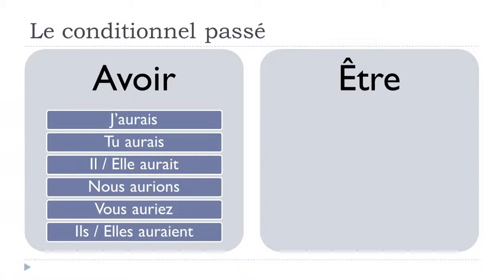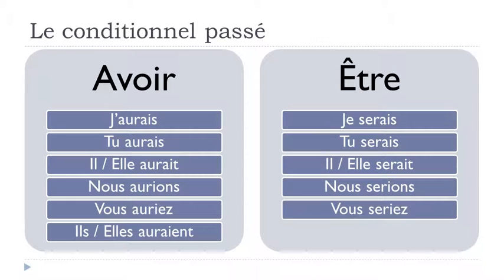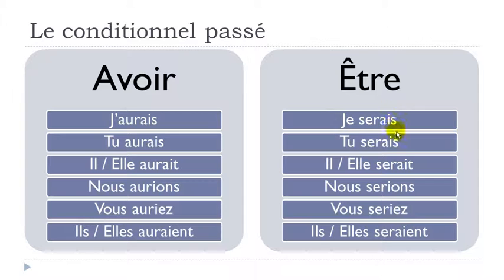For être at the conditionnel présent: je serais, tu serais, il serait, elle serait, nous serions, vous seriez, ils seraient, elles seraient. Same pronunciation rules apply: final S and T are silent, vous seriez ends with the sound 'et', and ils seraient with A-I-E-N-T is also pronounced like 'serait'.